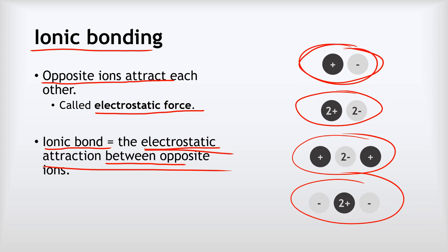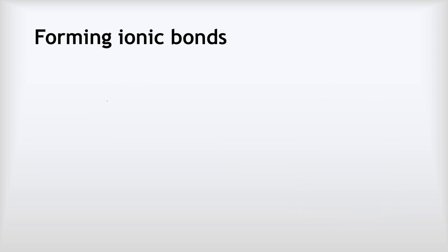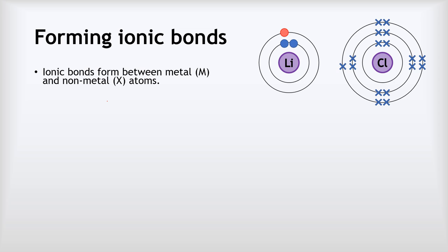Now we know what ionic bonds are, the next question we need to ask ourselves is when and why do they form. When they form is easy to answer: they form between metal atoms, which we can call M, and non-metal atoms, which we can call X.